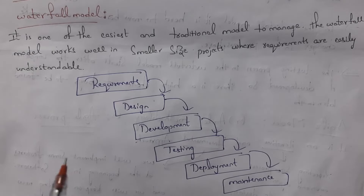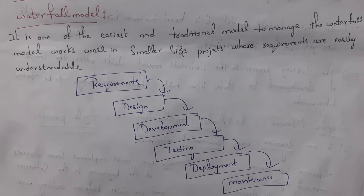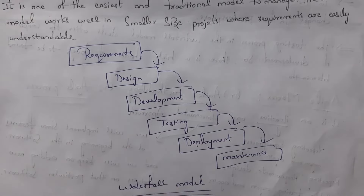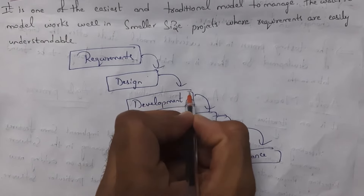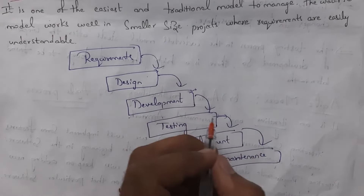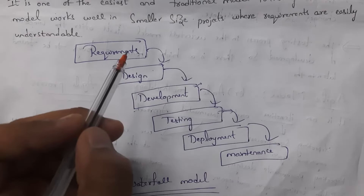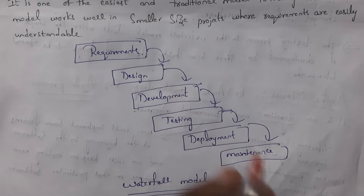Next, what is the waterfall model? The waterfall model is one of the easiest and most traditional models. It is suitable only for small size projects, not large ones. In the waterfall model, only after completion of one phase do you go to the next — requirement gathering, then design, then development, then testing, then deployment, then maintenance. You cannot go back to a previous phase. For example, if you are in testing phase and want to make changes in development, you cannot go back.